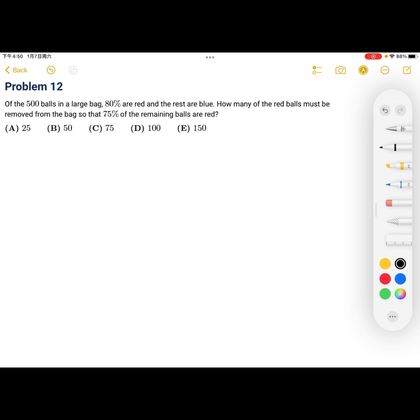So what we want to first do is figure out how many red balls there are, which is 80% of 500. That is 400. And then blue would be the remaining. So 100.